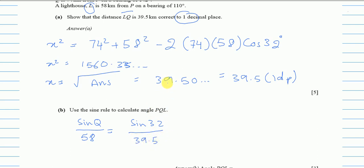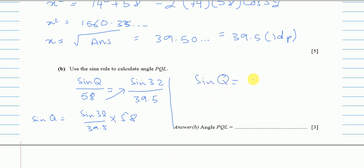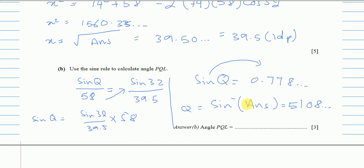Even if you never found 39.5 in Part A, you can still use that answer here for three marks. Solving: sin(Q) = (sin(32°) / 39.5) × 58 = 0.778..., so Q = sin⁻¹(0.778...) = 51.08..., which rounds to 51.1° to one decimal place. Remember: angles are rounded to one decimal place, not three significant figures.